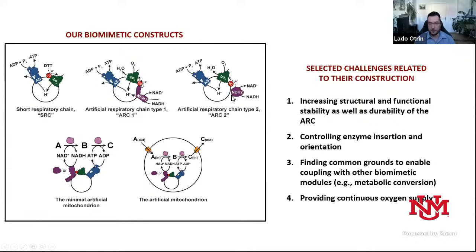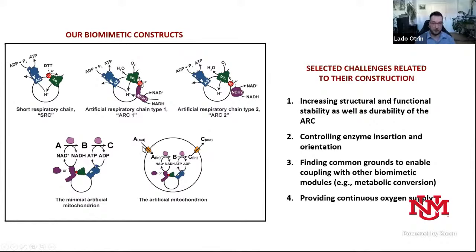We have two options: an integral membrane protein, which is another proton pump and should contribute more to the proton gradient making the module more active, and a water-soluble variant. When we connect the artificial respiratory chain with a metabolic cascade, we call this minimal artificial mitochondria. Instead of the Krebs cycle, we have a metabolic cascade; instead of the respiratory chain, we have an artificial respiratory chain. Finally, for a complete organelle, we encapsulate this reaction in an outer compartment containing transporters for substrates and products.